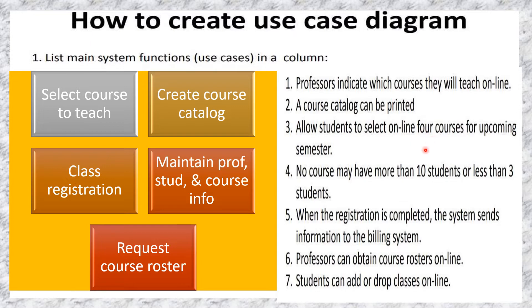For number six, professors can obtain course rosters online, so we need the use case 'Request Course Roster.' And to maintain all information, we also need use cases such as 'Maintain Professor Information,' 'Maintain Student Information,' and 'Maintain Course Information.' These complete the use cases based on the given scenario from conditions one to seven.